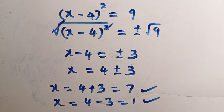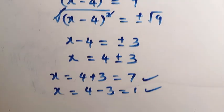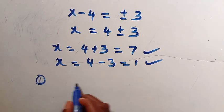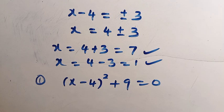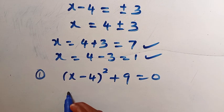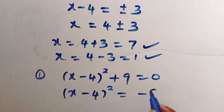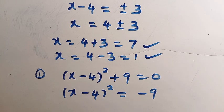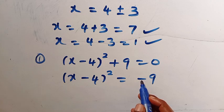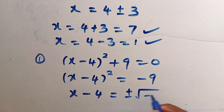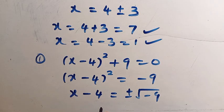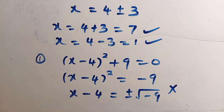For Case 2, if x minus 4 squared plus 9 equals 0, transferring 9 to the other side gives x minus 4 squared equals minus 9. Taking the square root of both sides gives x minus 4 equals plus or minus square root of minus 9. This is a complex root. Since x is a member of the real numbers, we reject this second case. The only values of x are 7 and 1.